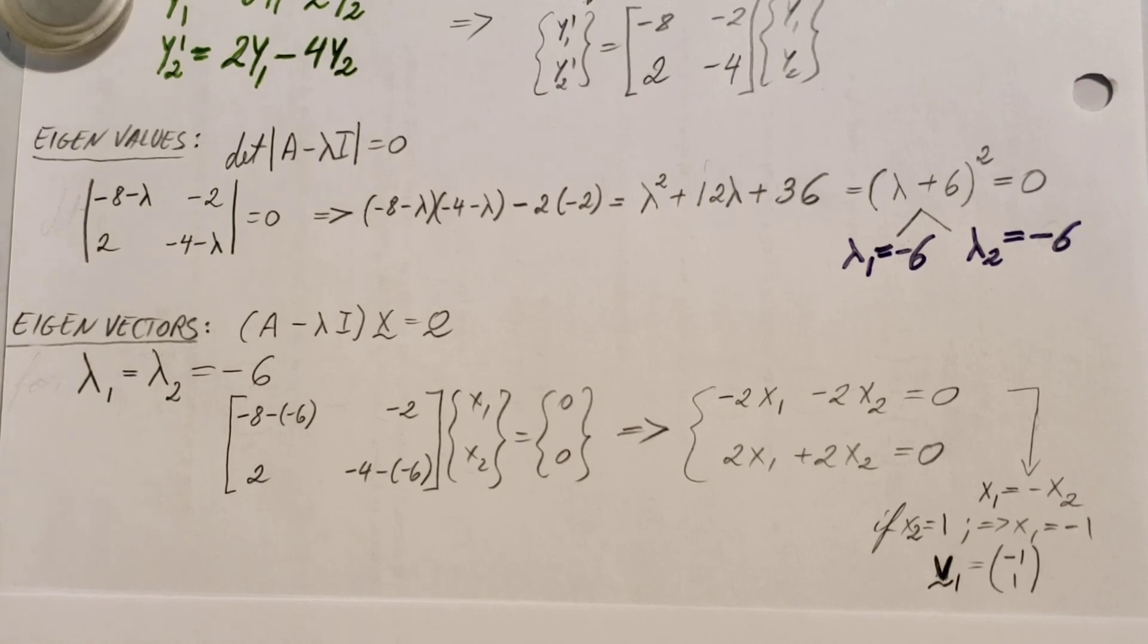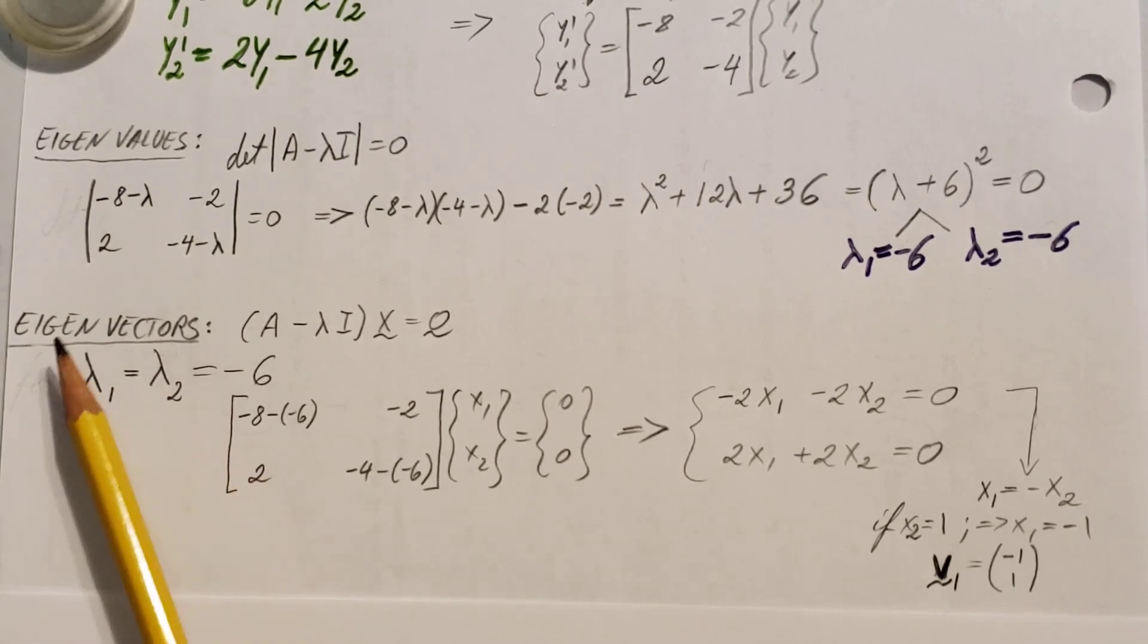But we can see that we're in a pickle because we have two eigenvalues but only one eigenvector. So we need to fix that.